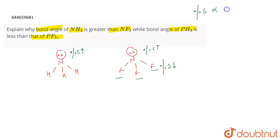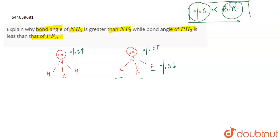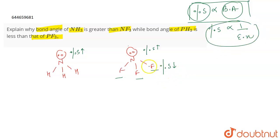The percentage s-character is directly proportional to the bond angle — more s-character means a greater bond angle. Also, percentage s-character is inversely proportional to electronegativity. So if the electronegativity of the side atom is higher, the percentage s-character decreases, and when the percentage s-character decreases, the bond angle also decreases.